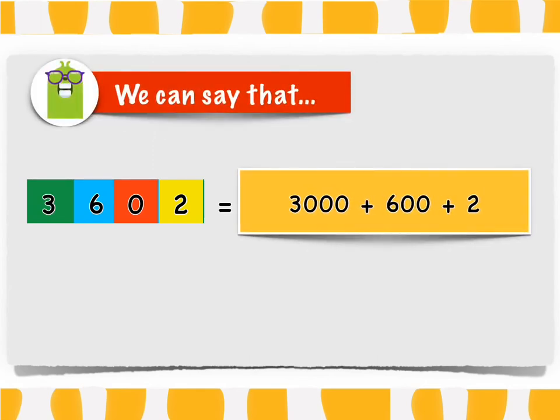Again, we say that 3,602 is equal to 3,000 plus 600 plus 2. Keep in mind that even though the zero does not have any value at the tens place, it serves as a placeholder for the given number. Removing the zero in the given number will change 3,602 into 362.